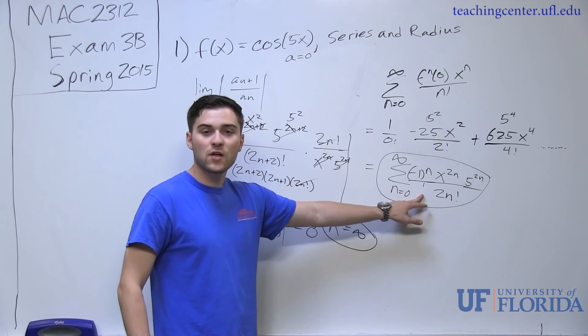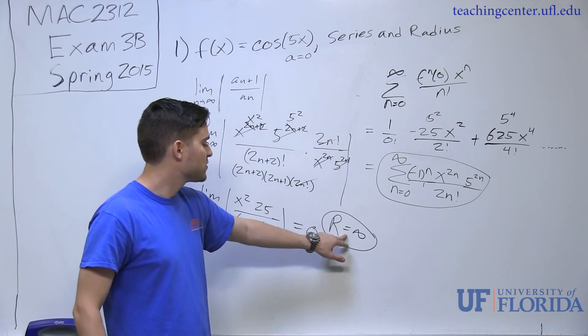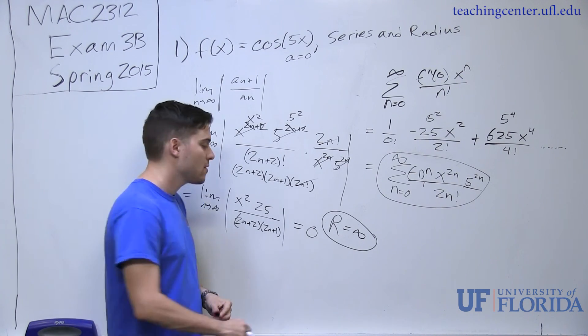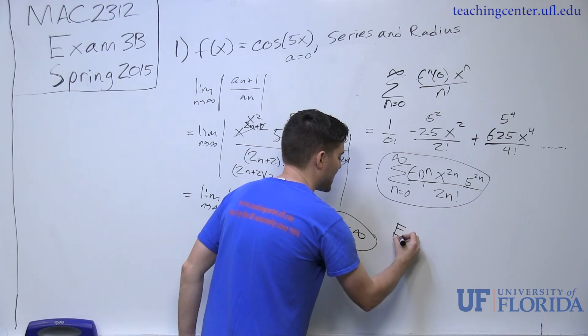We found our Maclaurin series, and then by applying ratio test, we found that our radius was equal to infinity. On exam 3b, this would be answer e.